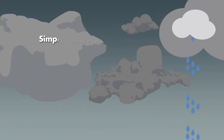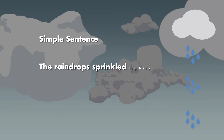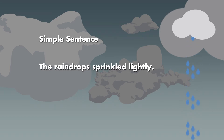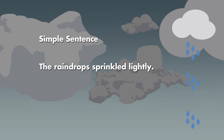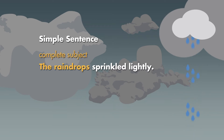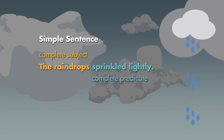A simple sentence has a complete subject and a complete predicate. It tells a complete thought. The raindrops sprinkled lightly. The complete subject is the raindrops. The complete predicate is sprinkled lightly.